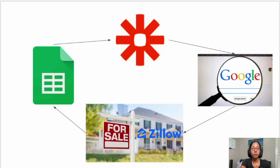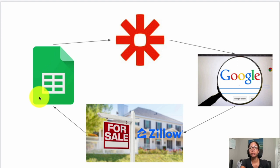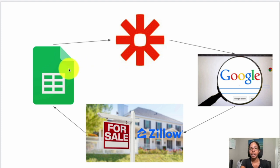For our Zapier workflow we're going to be using Google Sheets, which will allow us to have a list of properties and specify what columns we want to automatically get data for from the Zillow API with absolutely no code. Our flow starts with Google Sheets, which is free — just get a Gmail account. Then second we're going to use Zapier, which is a workflow automation tool that connects many different apps.